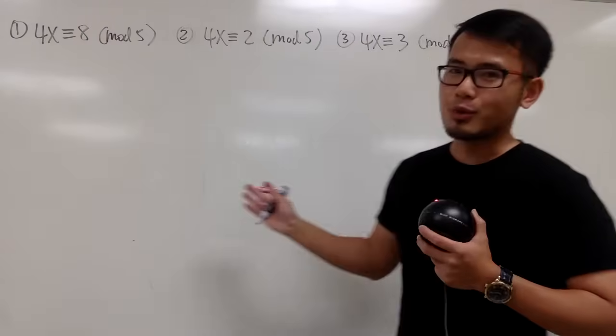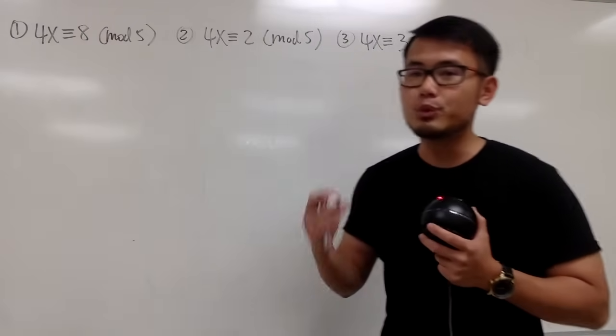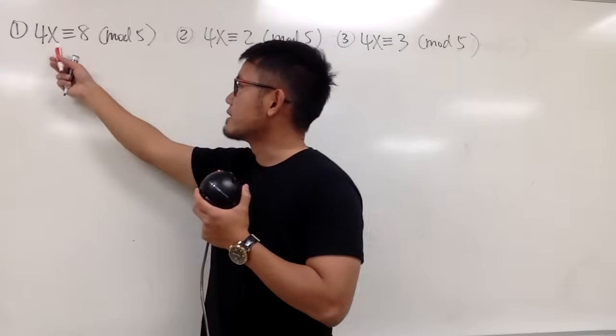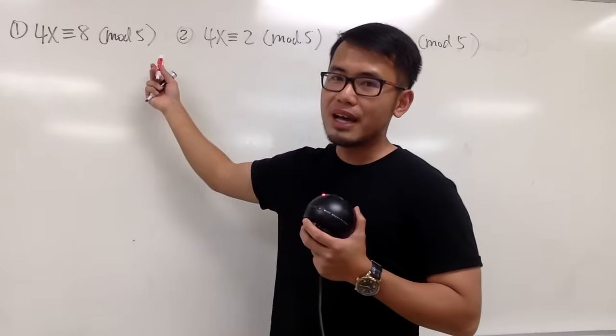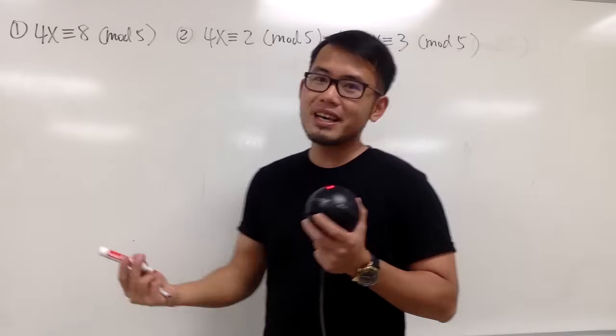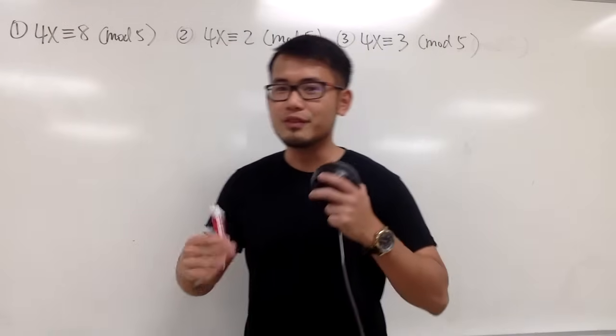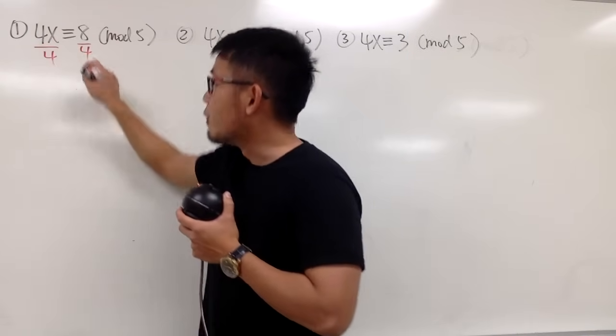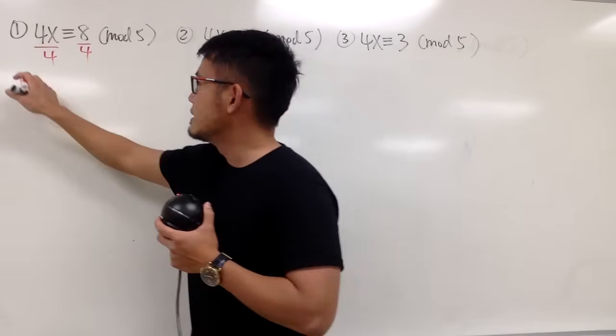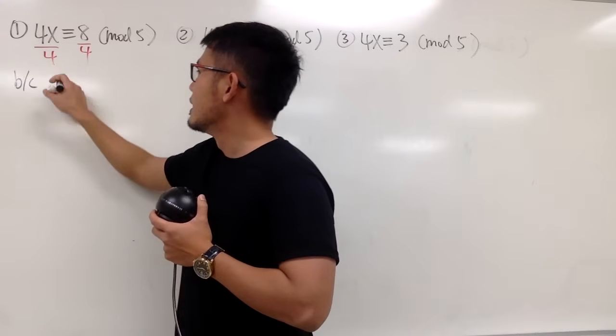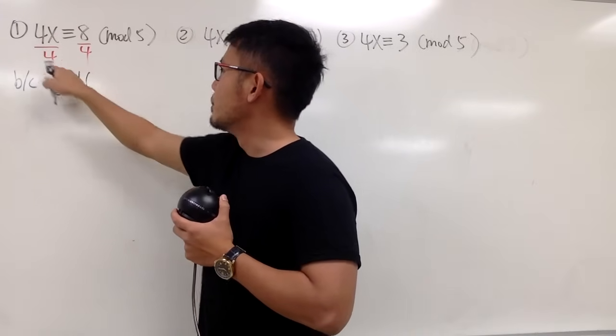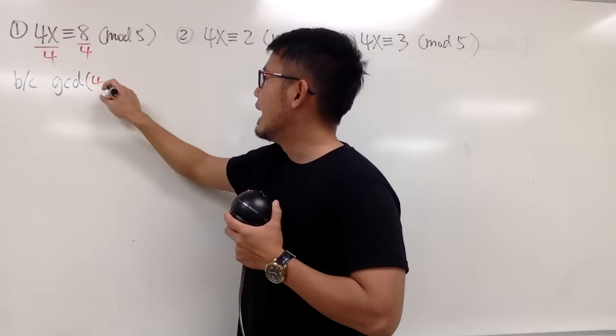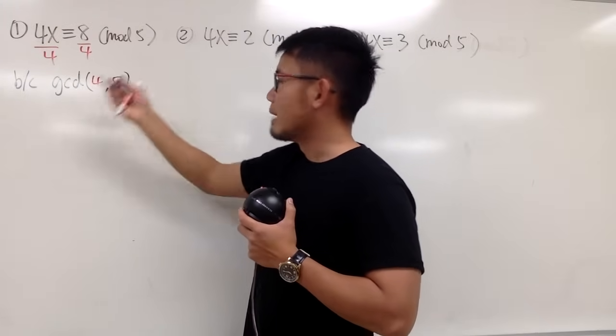Okay, when you are doing this kind of questions, be sure you do them really carefully. Let's start with the first one. We have 4x is congruent to 8 mod 5. Well, in this case, this is actually just as easy as solving a regular equation. We can legitimately divide both sides by 4 because, let me just write this down for you guys, the greatest common divisor between 4, which is the number that we are dividing on both sides, and this number, which is modding 5, right?